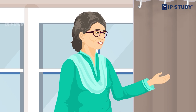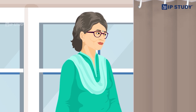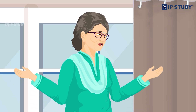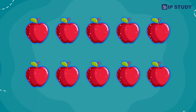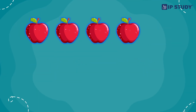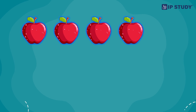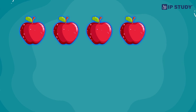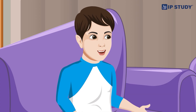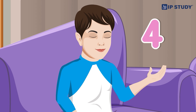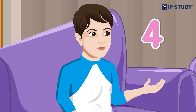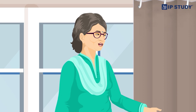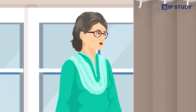Grandma poses a question: if you have 10 apples and she takes away 6, how many are left? Arman answers correctly: 4 apples are left. Grandma confirms he is right.